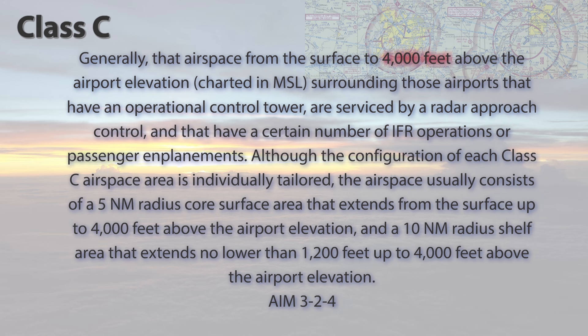Although the configuration of each Class C airspace is individually tailored, the airspace usually consists of a 5 nautical mile radius core surface area that extends from the surface up to 4,000 feet above the airport elevation, and a 10 nautical mile radius shelf area that extends no lower than 1,200 feet up to 4,000 feet above the airport elevation. Just like Class D airspace, it is important to keep in mind that the size and shape of each Class C airspace will be designed to suit the needs of the airport it is surrounding.